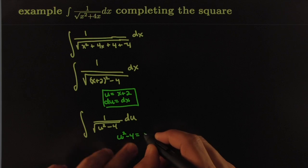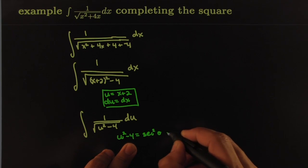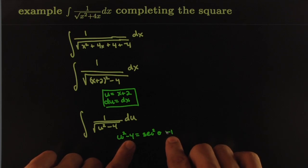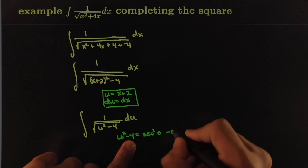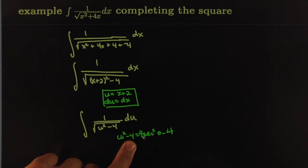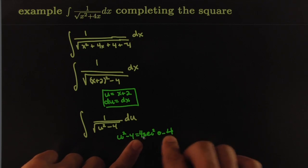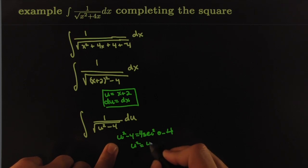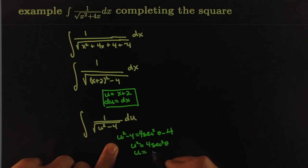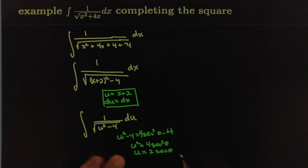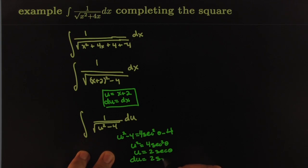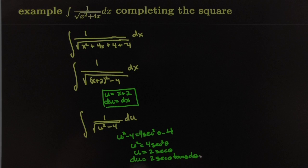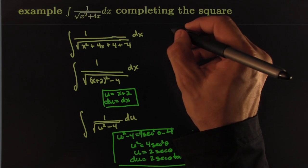We want u² − 4 to match the form of a secant identity. Since there's a 4 there, not a 1, we need to factor: we'd want u² = 4 sec²θ, or equivalently u = 2 secθ. Then the differential du = 2 secθ tanθ dθ. That becomes our trig substitution dictionary.